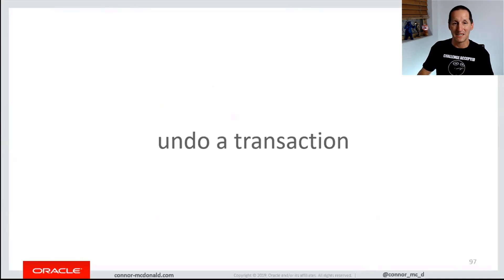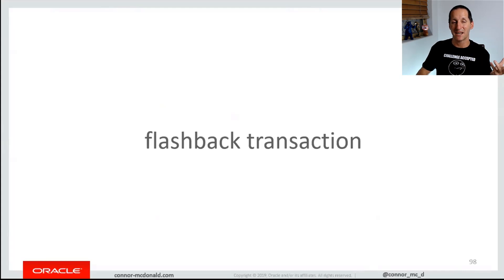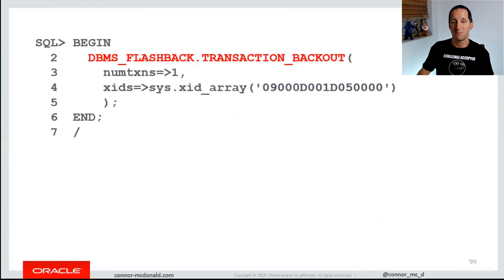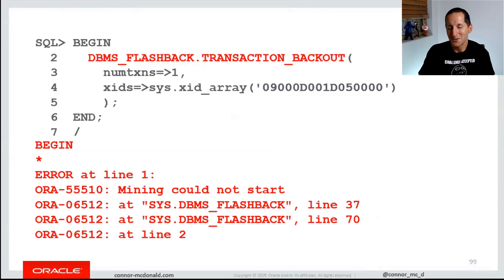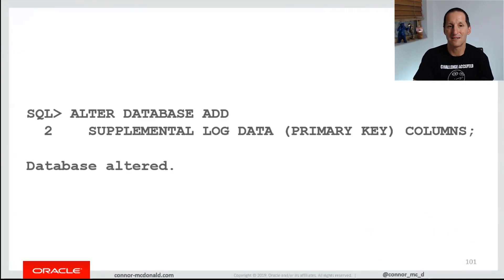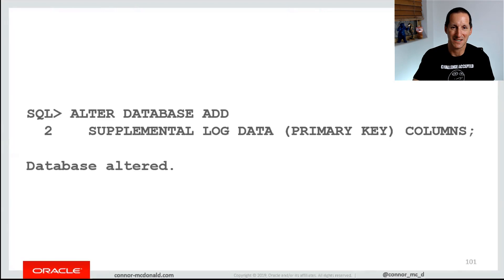Flashback transaction uses an API mechanism to actually do that. Here's the version XID we got from a flashback query using flashback row versions. The API we use is DBMS flashback transaction backout. I want to back out a transaction — I deleted department number 10 from the employee table. But this is your most likely result: unfortunately you're probably going to see 'Mining could not start', at which point you get to wave goodbye to your data because it's gone forever. A critical requirement before you can undo a committed transaction using DBMS flashback transaction is you must have at least a bare minimum level of supplemental log data enabled. If you haven't run that statement, you're not going to get any benefit from transaction backout.